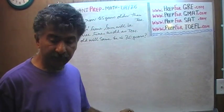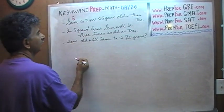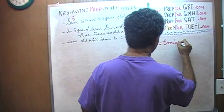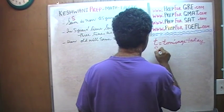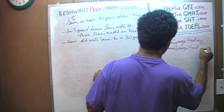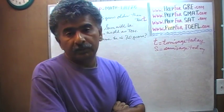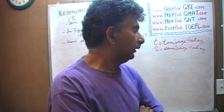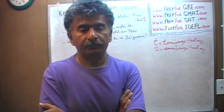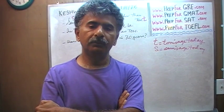So here we have two people, Sam and Tom. Let's call them S and T. We are going to use the letter S to represent Sam's age, and T to represent Tom's age. T means Tom's age today; S means Sam's age today. Since we have two unknowns, we have to have two independent equations.